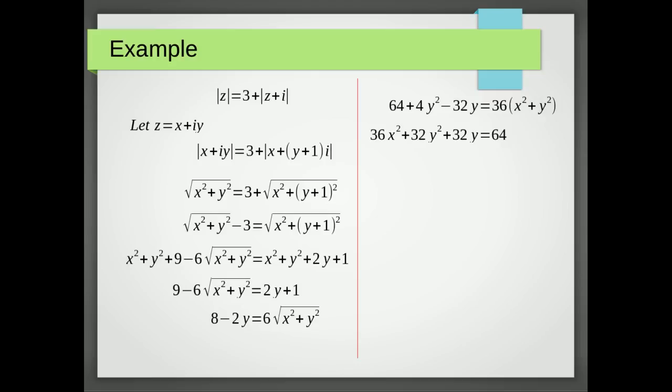But I need to do something with that y squared and that y. And what I want to do is complete the square. So I want to get a single y squared. So what I'm going to do, I'm going to divide through by four and then factorize out eight.